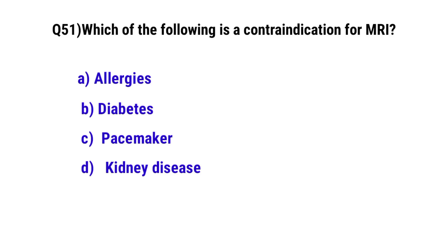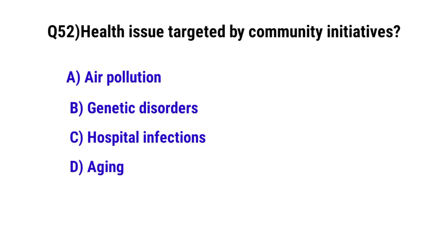Question number 51. Which of the following is a contraindication for MRI? The correct option is C: Pacemaker. Question number 52 on health issues targeted by community initiatives. The correct option is A.